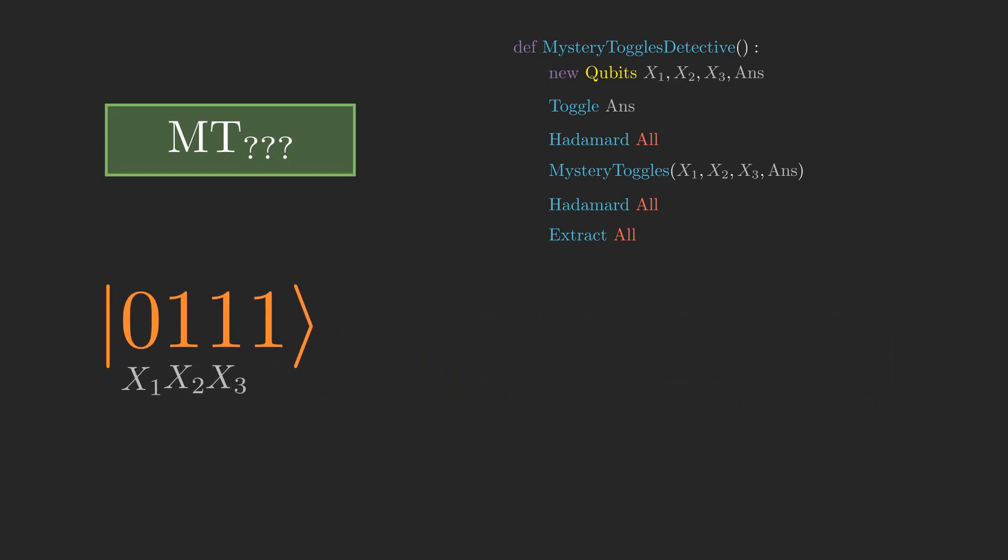Look how this program ends up outputting a string of bits where x2 and x3 are toggled, corresponding to the version of mystery toggles where the line for x1 is missing and the lines for x2 and x3 are both present.